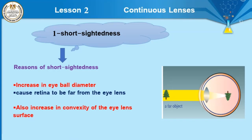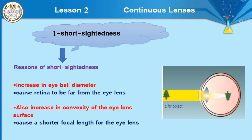In the normal person, the image is formed on the retina. There are three reasons for short sightedness: number one, increase in eye ball diameter; number two, increase in the convexity of the eye lens; number three, shorter focal length, or decreasing the focal length of the eye lens. Increasing convexity causes shorter focal length for the eye lens.